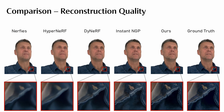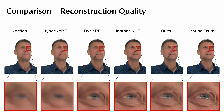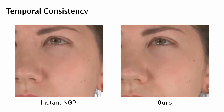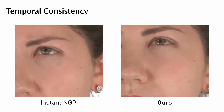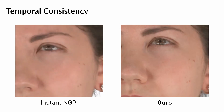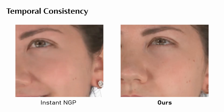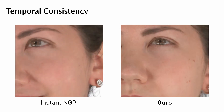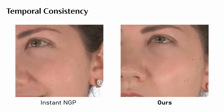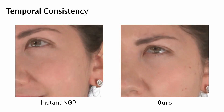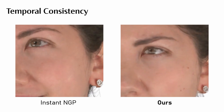Note that the instant NGP baseline is trained separately on every time step and has no notion of time, which leads to temporal inconsistencies. This causes severe flickering artifacts for the instant NGP baseline. In contrast, our method provides a smooth temporal experience.